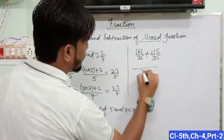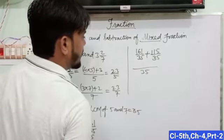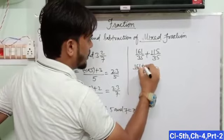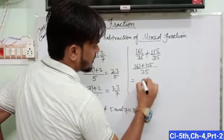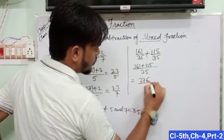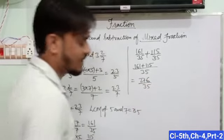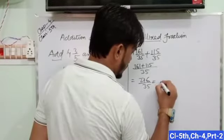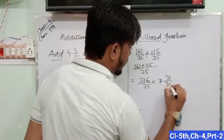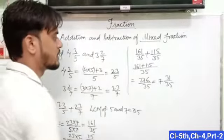Now we have 161 upon 35 plus 115 upon 35. We have the same denominators, 35, so add only numerators. 161 plus 115 equals 276 upon 35, which equals 7 and 31 upon 35.